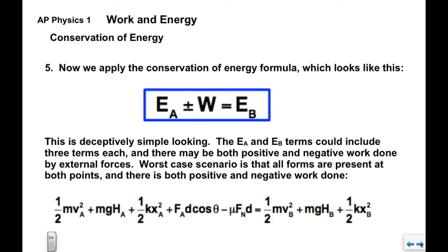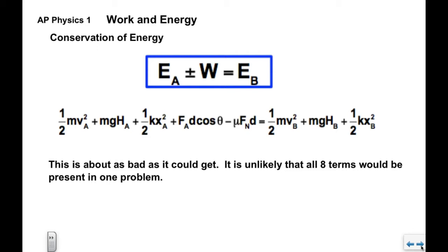Now again this is deceptively simple looking because the energy at A and energy at B terms could include any combination of those three terms we saw before. So if we look down here this is about the worst case scenario. Here's point A. We have all three forms present. There's work done between A and B. There's negative work done between A and B. And then we have the energy at B in all three of those forms. So this is about as bad as it could get. It is unlikely that we would have all eight terms in one single problem. But it's possible.